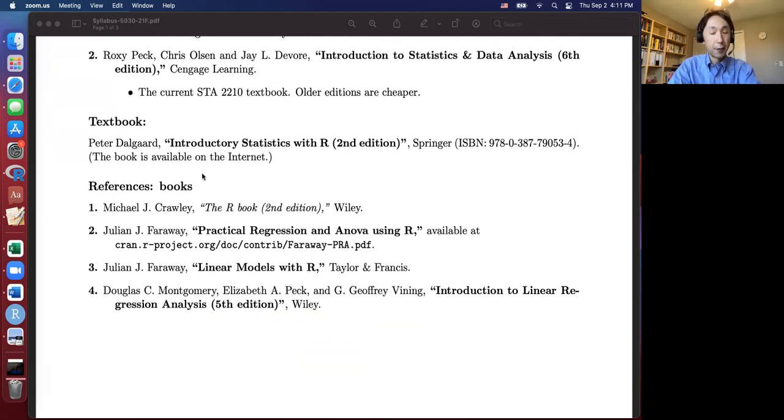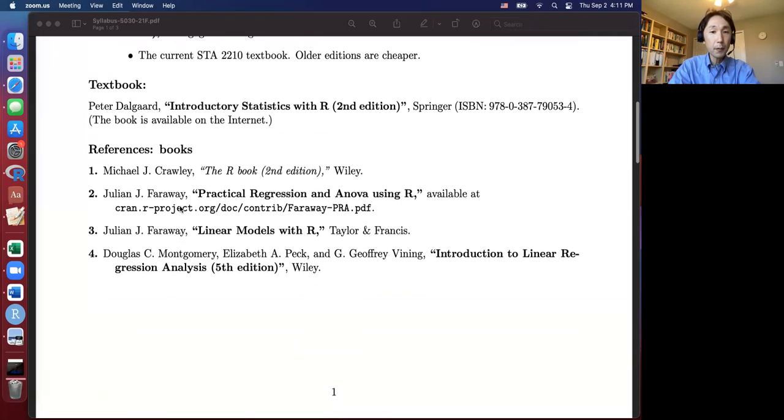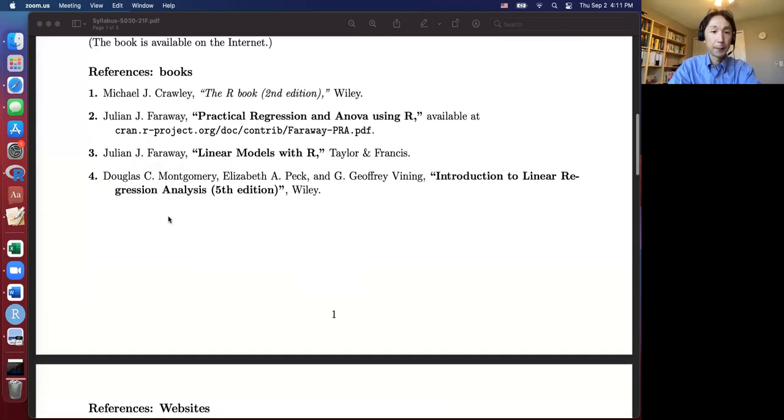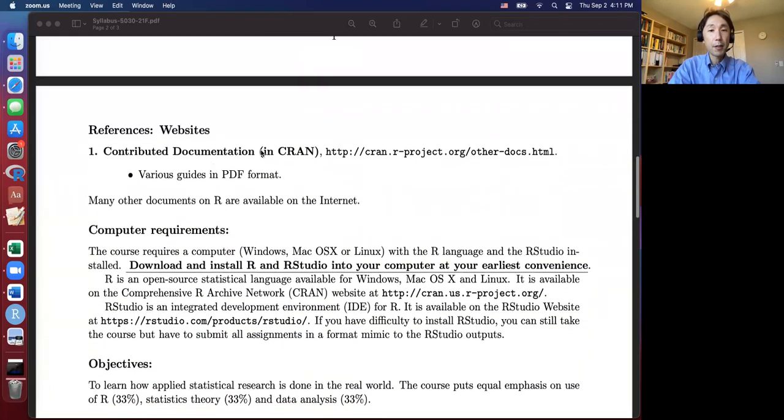And some reference books. These are all similar to this textbook, but sometimes these references have more explanation. The first one is the R book, this is a very thick book, maybe more than 1000 pages, and the contents are very similar to the textbook, but it includes more explanations. The second, third, and fourth ones are a little more advanced textbooks, but they correspond to chapter six and later of this lecture. And some other documentation is available on the R Archived Network, the Comprehensive R Archived Network website.